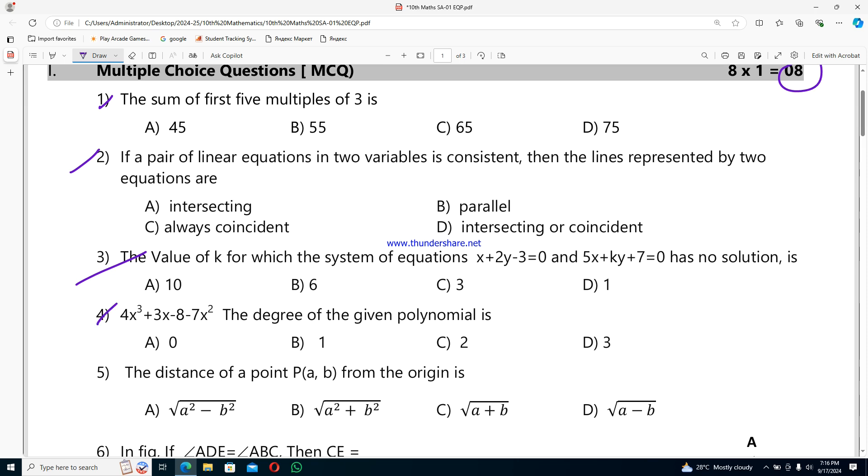Fourth question: 4x³+3x-8-7x². The degree of the given polynomial is option A 0, option B 1, option C 2, option D 3.